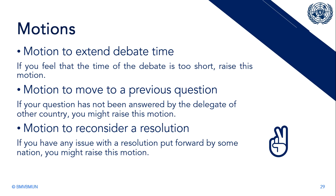There is a motion to move to a previous question. If you had raised a point of information to a speaker and during that time they gave an answer that did not clear your question, you can raise a motion to move to a previous question after the debate is over. There is also a motion to reconsider a resolution. After unmoderated caucus you submit the resolution, so if a delegate or a number of delegates have some issues with a resolution, they can pass a motion to reconsider it. Keep in mind that points do not need voting to be passed.